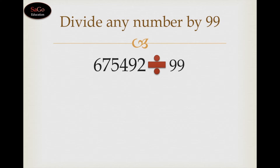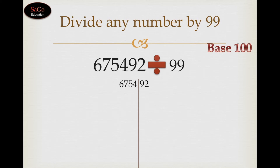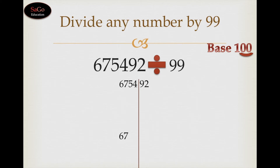Let's take one more sum: 675492 divided by 99. Write down the dividend as it is, put a slash before the last two digits because the base is 100 and there are two zeros in the base 100. Write the first two digits as it is, which is 67. Now this 67 would be written under the next two digits.